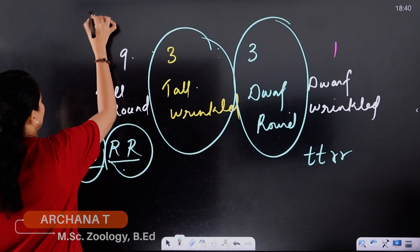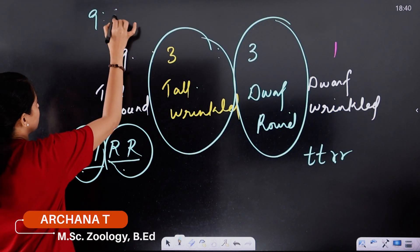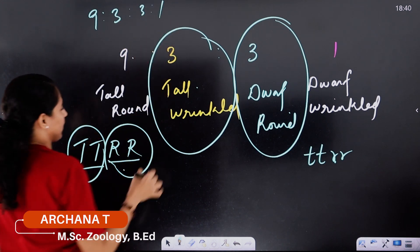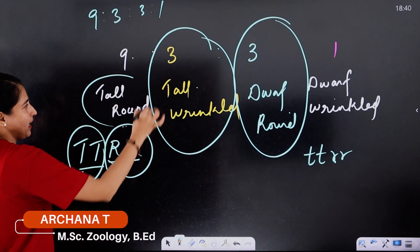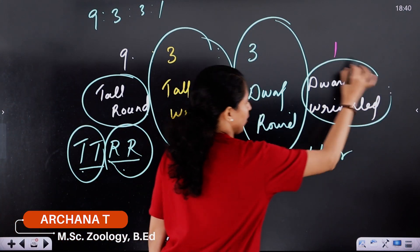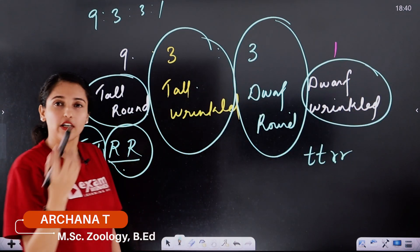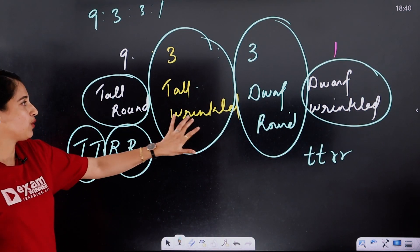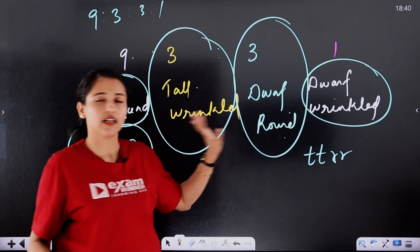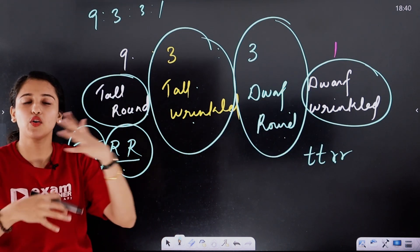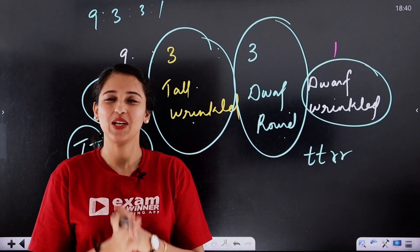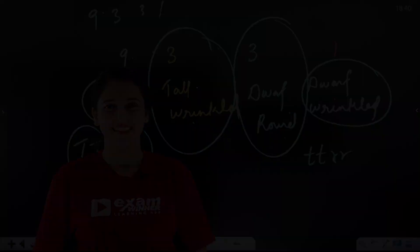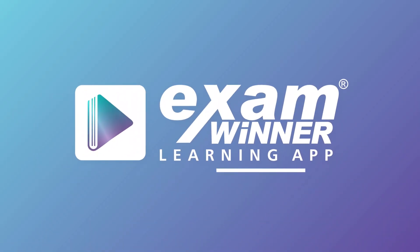Let's look at the phenotypic ratio. The phenotypic ratio is 9:3:3:1. The parental combinations are tall and round, and dwarf wrinkled. The new combinations are tall and wrinkled, and dwarf round. This is the Law of Independent Assortment.